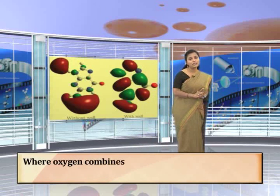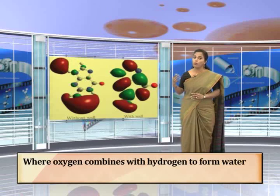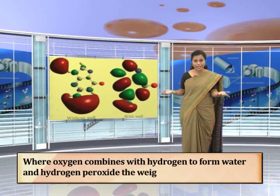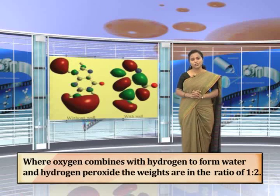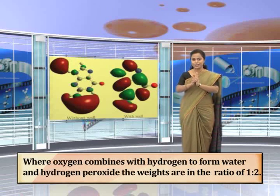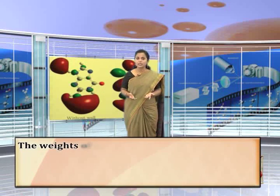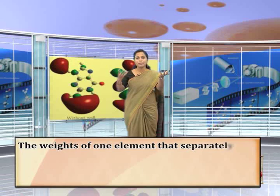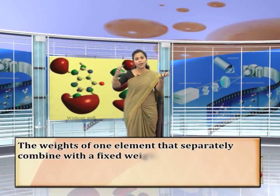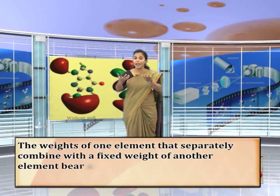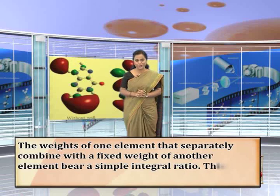Also in the case where oxygen combines with hydrogen to form water and hydrogen peroxide, the weights are in the ratio of 1:2. So from the experiment we conducted and the various examples we have seen, it is clear that the weights of one element that separately combine with a fixed weight of another element bear a simple integral ratio.